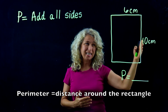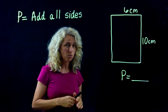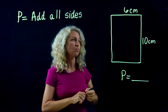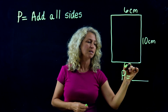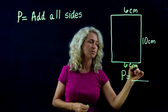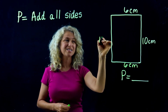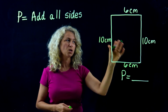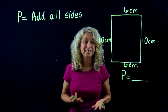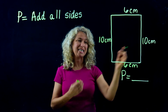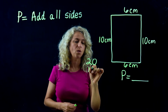In order to find the perimeter, let's label the rest of the sides. If this is 6, this side is also 6 centimeters. And if this side is 10, this side would also be 10. So just continue labeling, then simply add: 10 plus 10 is 20, and 6 plus 6 is 12.